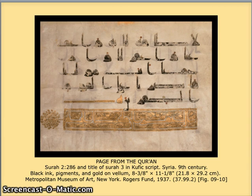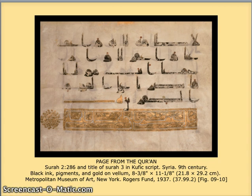Calligraphy was very important to early Islam and is actually still an important art form to this day. Much as we saw with the medieval monks who would transcribe the Bible word by word, there were people in Islamic society who did the same thing. This is an early page from the Koran. An interesting thing about Islamic script is that it has many different styles. This is one style called the Kufic style, and it's noteworthy because it's sort of blocky and very easy for a lot of people to read.